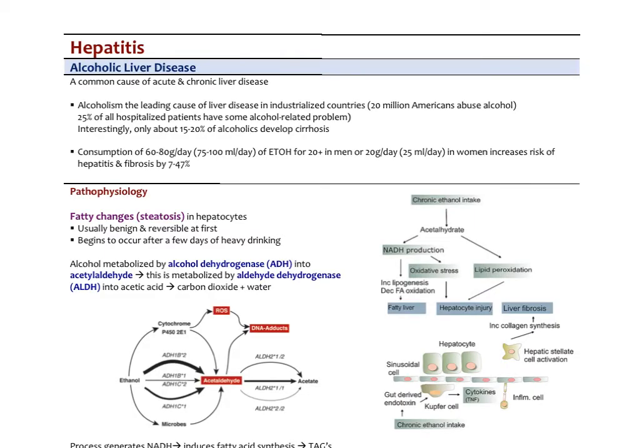The last two causes of hepatitis I'm going to talk about are alcoholic liver disease and non-alcoholic fatty liver disease. Let's look at the alcoholic liver disease first. Alcoholism is the leading cause of liver disease in industrialized countries. Over 20 million Americans abuse alcohol. These are statistics from a few years ago, so they might actually be more now. 25% of all hospitalized patients have some alcohol-related problem.